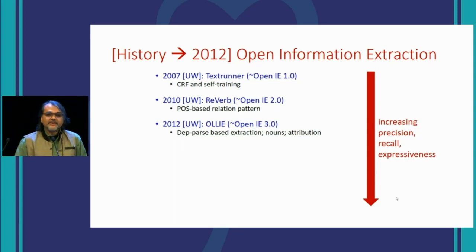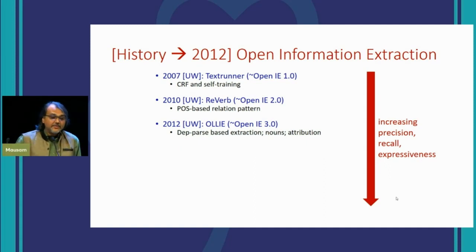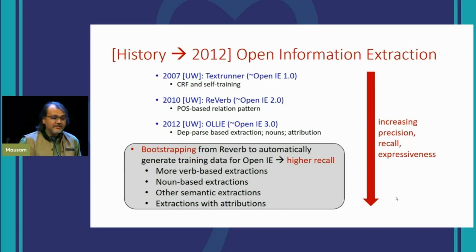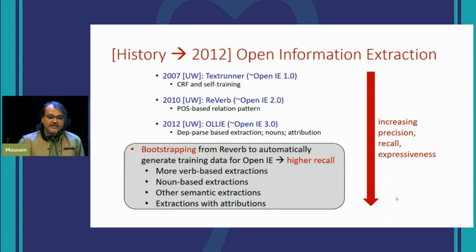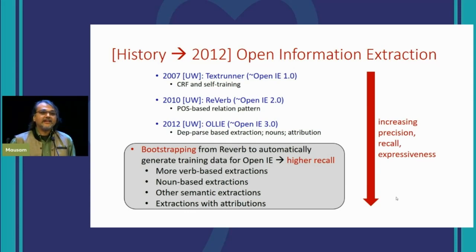OLLIE, the paper receiving this award, was the third-generation OpenIE system. It used dependency parse-based extraction, could extract information from nouns, and additionally extract attribution information. The main idea was a bootstrapping approach to handle open relations — we could do verb-based relations, noun-based and other semantic relations with attributions — giving us much better recall. The general principle was to use a rule-based system to automatically tag data and then bootstrap through language variability to increase recall.